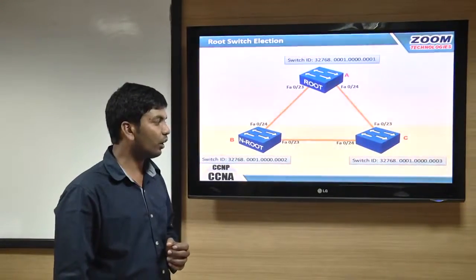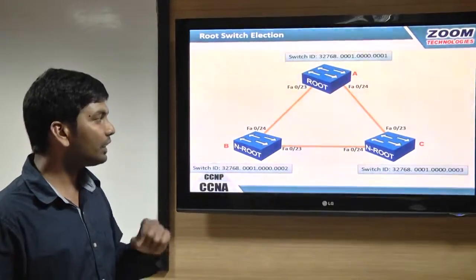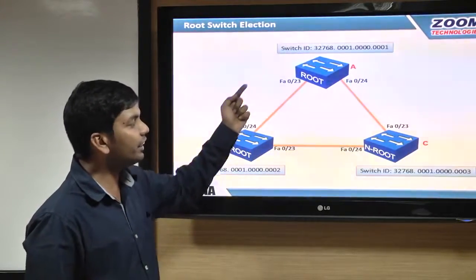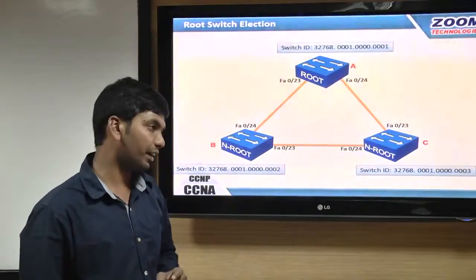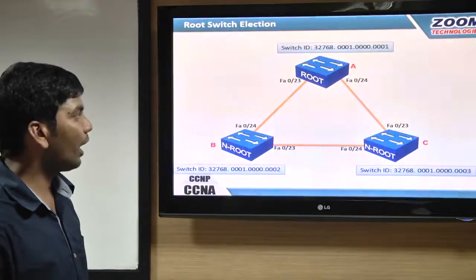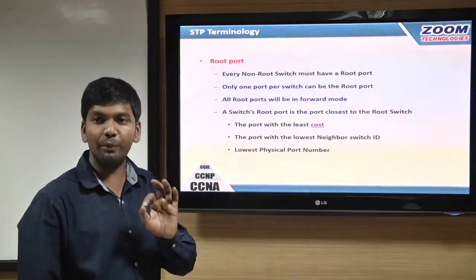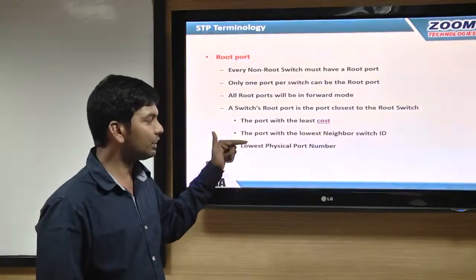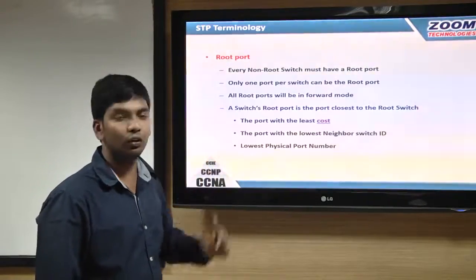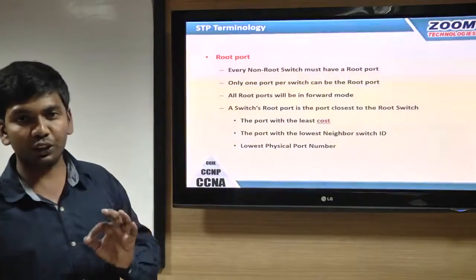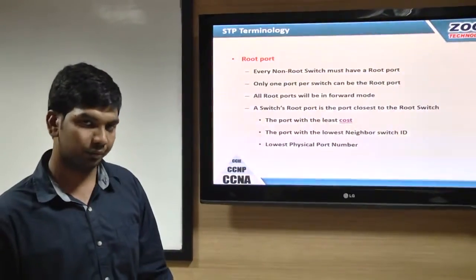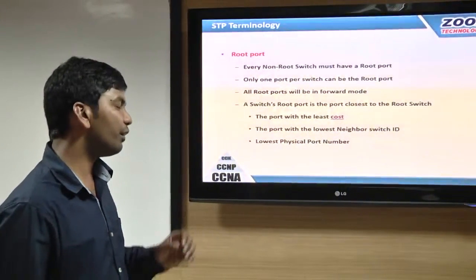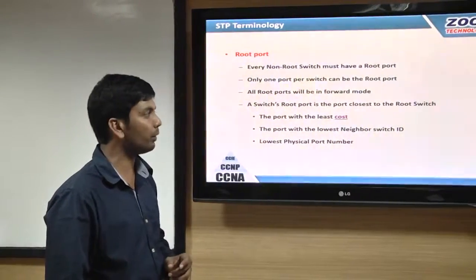After electing root and non-root switches by exchanging BPDUs, the next selection is for root ports. A root port is a port on the non-root switch used to send updates to the root switch. Every non-root switch has exactly one root port, elected based on least cost. If there is a tie in cost, it goes to the lowest neighbor switch ID; if that is also a tie, it goes to the lowest physical port number. The port closest to the root switch with least cost becomes the root port.